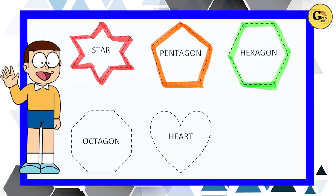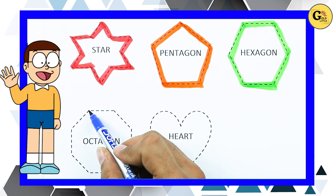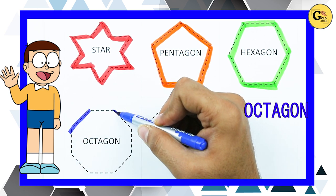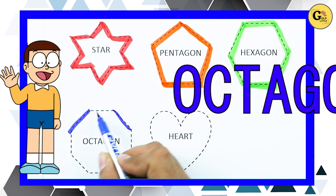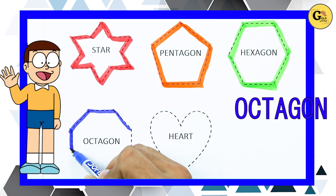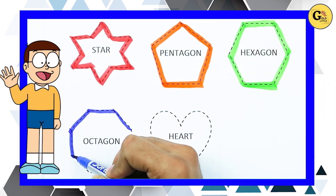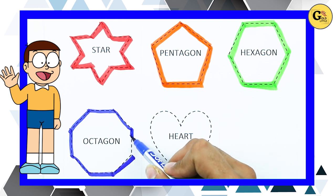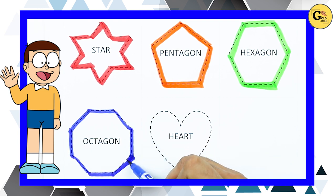Octagon: one line, two line, three line, four, five, six, seven, eight. Eight lines means octagon.